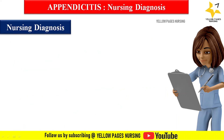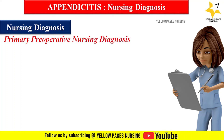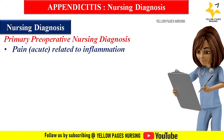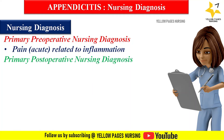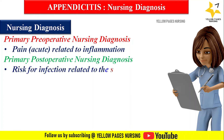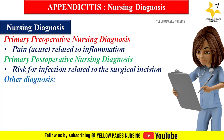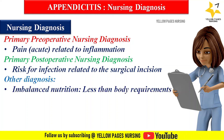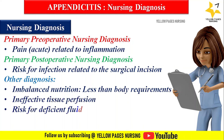Primary pre-operative nursing diagnosis includes acute pain related to inflammation. Primary post-operative nursing diagnosis includes risk for infection related to the surgical incision. Other diagnoses include imbalanced nutrition less than body requirements, ineffective tissue perfusion, risk for deficient fluid volume, and risk for injury.